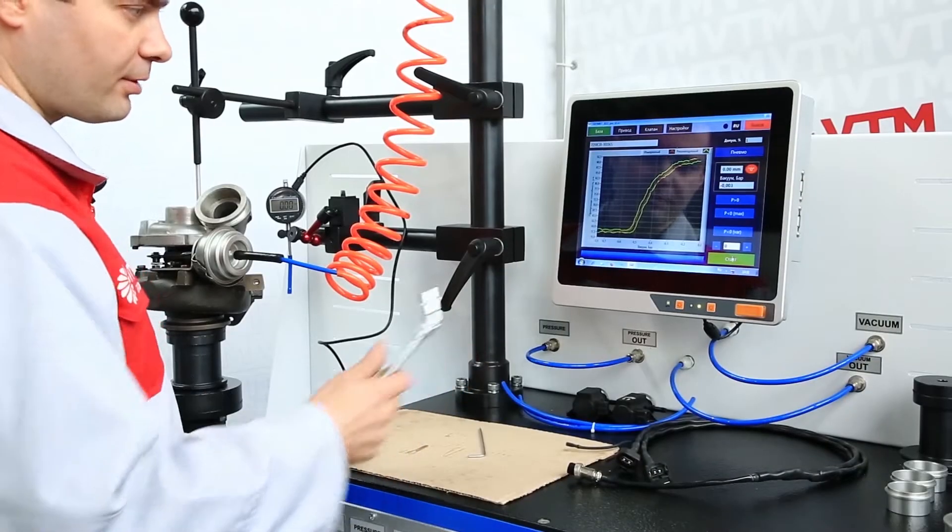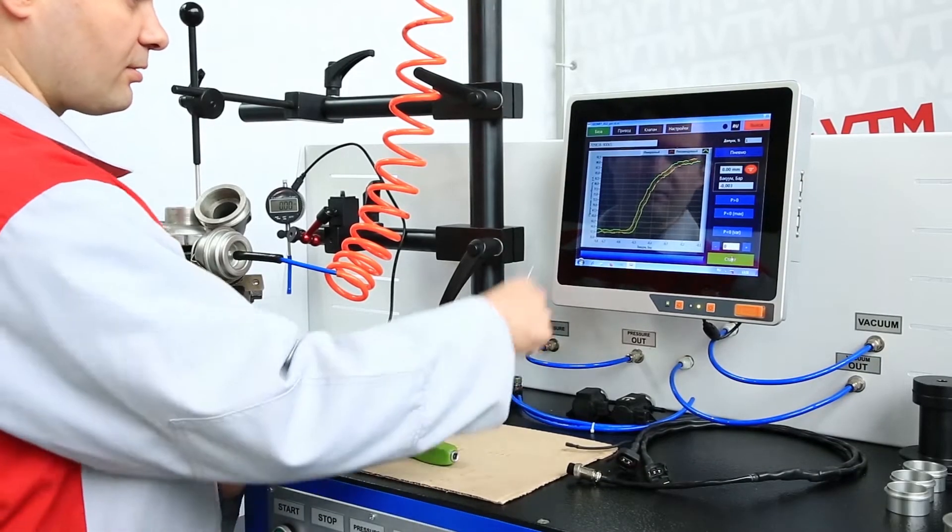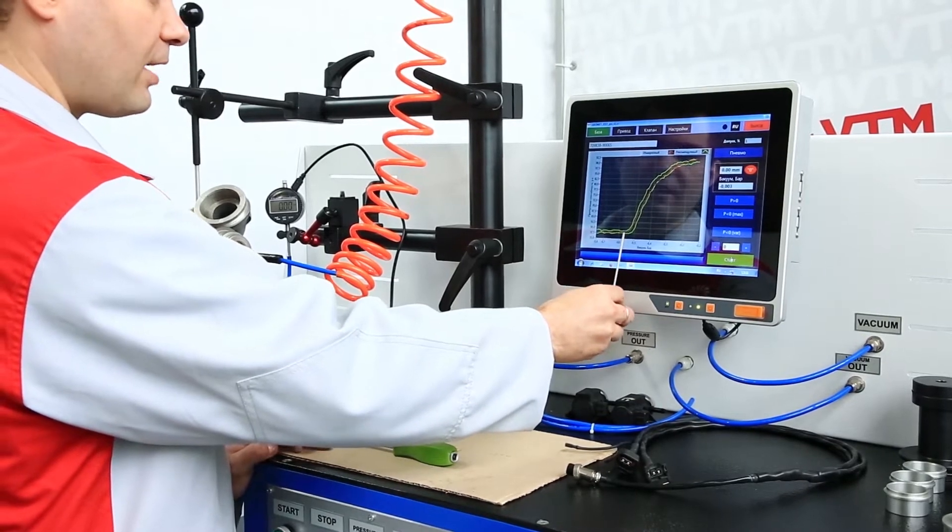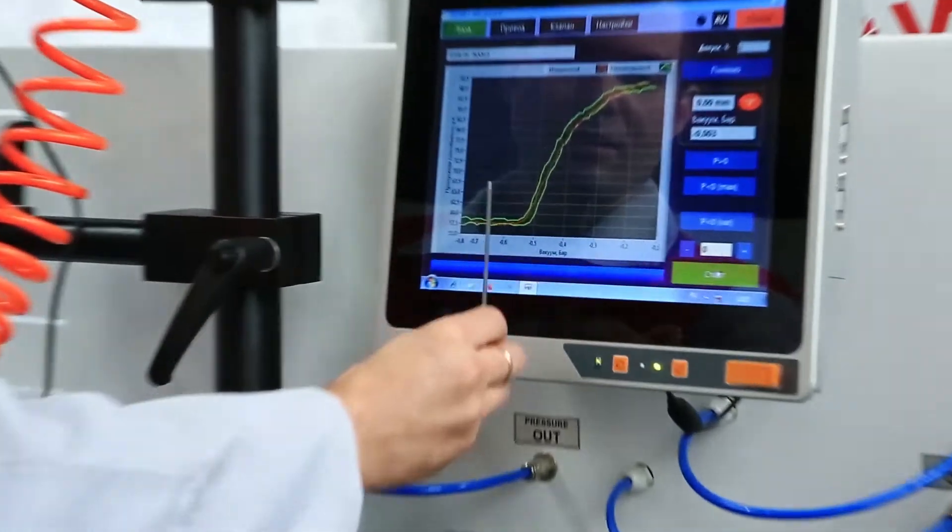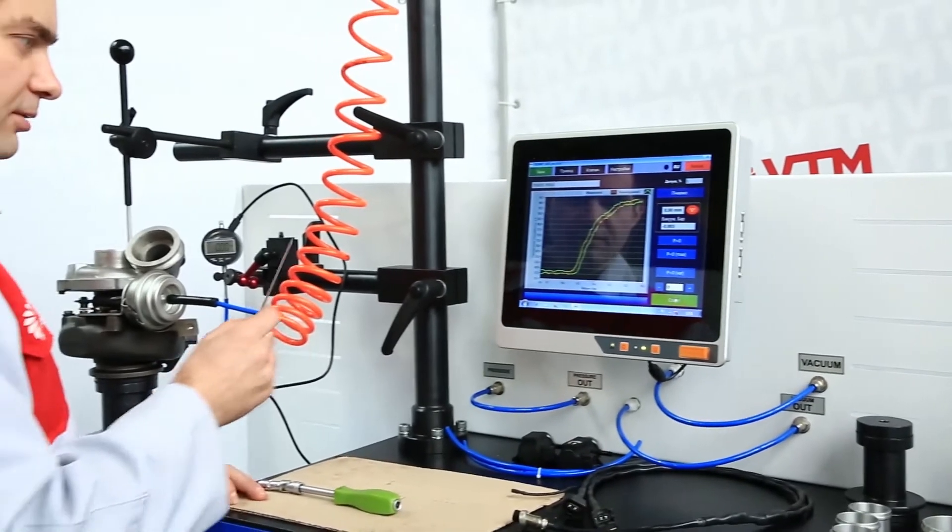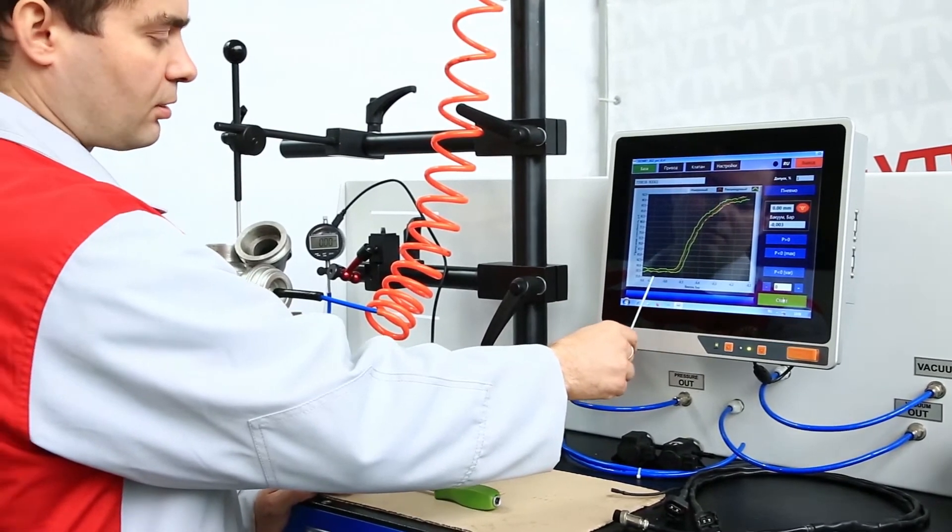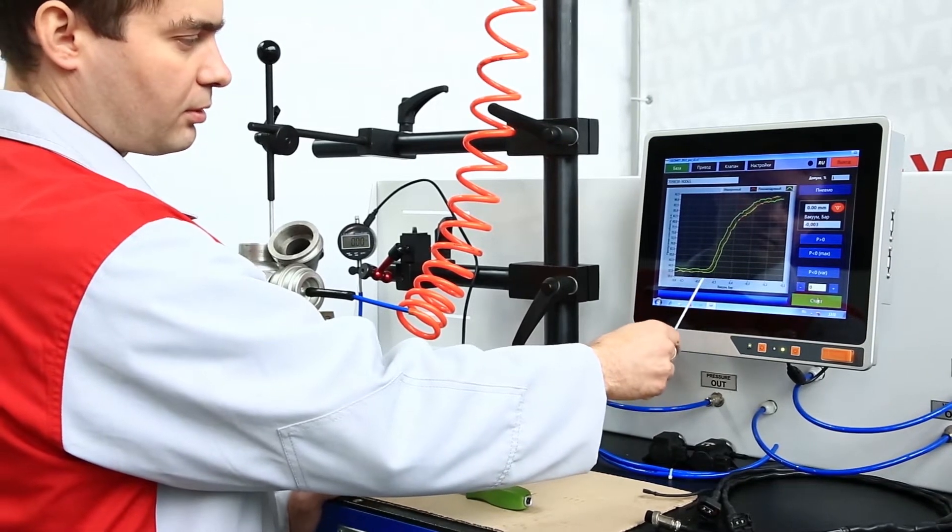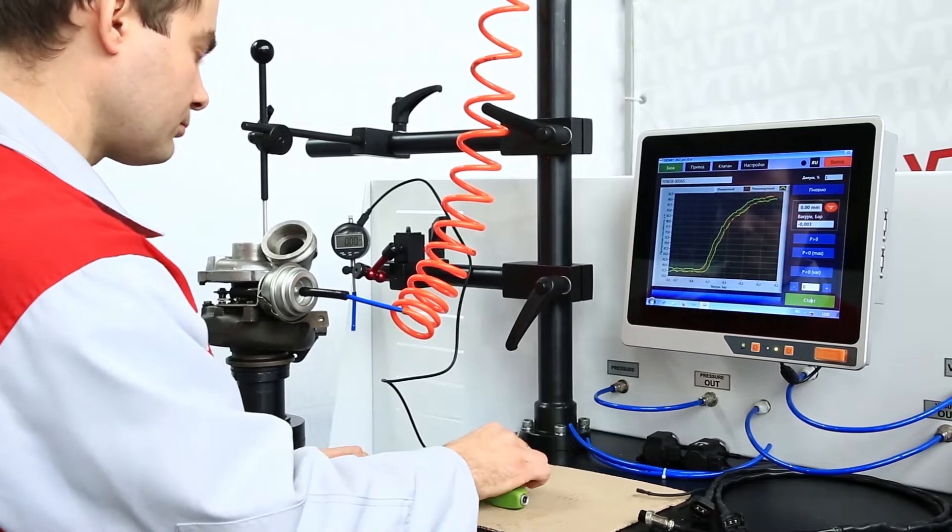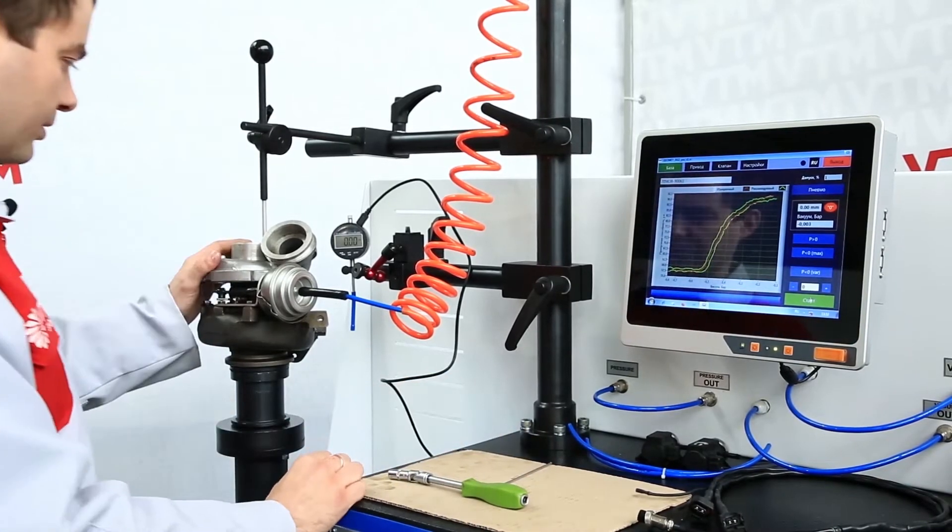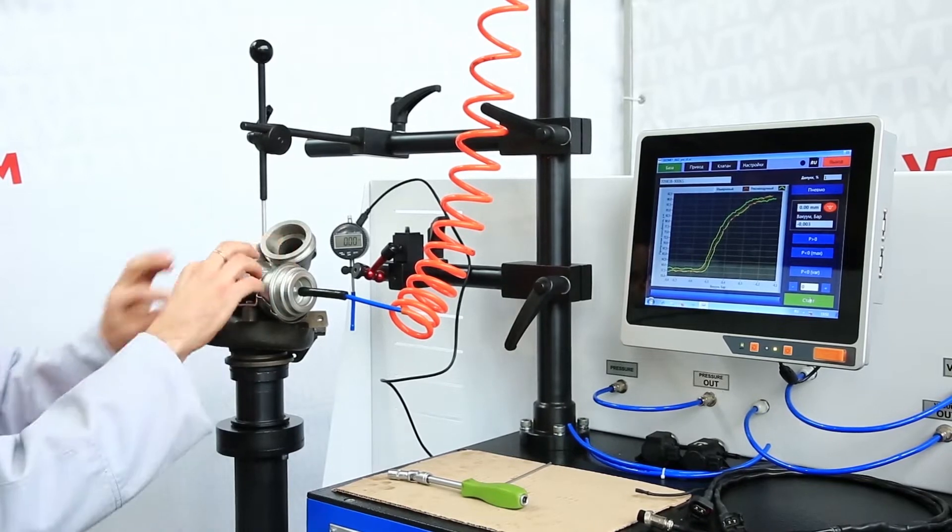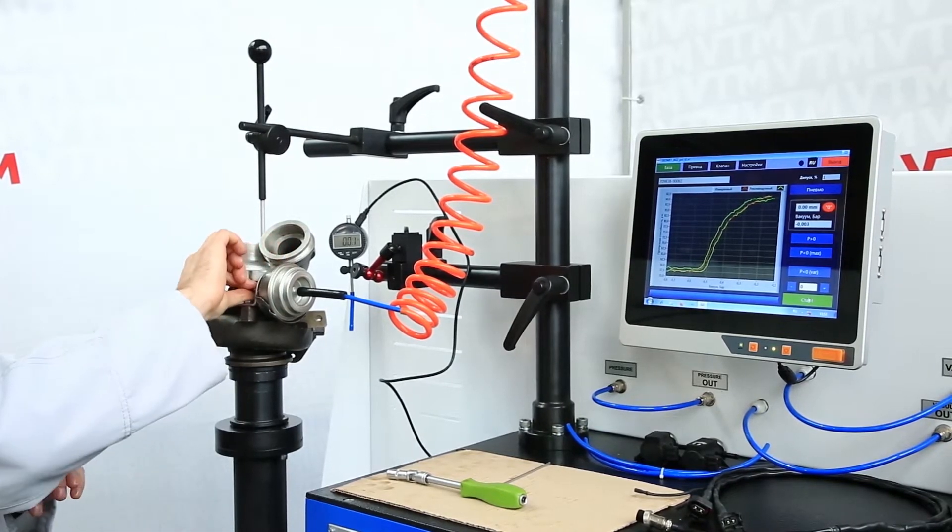According to this graph, we can adjust the moment of time by vacuum, that is, the moment of vacuum at which the geometry begins to open. On Garrett turbines, this moment is mainly in the minus 0.55 hundredths of a bar zone. In order to adjust or upset the turbine, there is a lock nut and a nut on the thrust which can be adjusted, moved, or shifted in the desired direction.